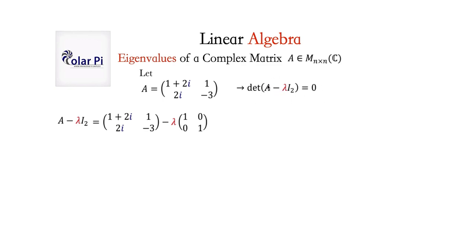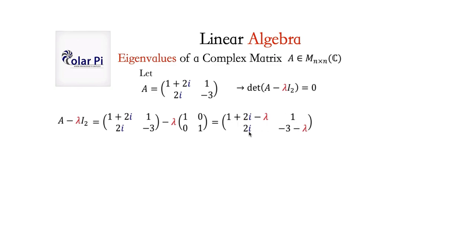The first thing we have to do is figure out what A minus lambda times I sub 2 would be — I sub 2 because we need the 2x2 identity matrix since our given matrix is 2x2. A minus lambda times I sub 2 is going to look like this first, and then upon doing scalar multiplication and the appropriate subtraction, you should find that A minus lambda times I sub 2 is this matrix. So it is the determinant of this matrix that we need, and then we set it equal to zero. 2x2 determinants work the same way as before.